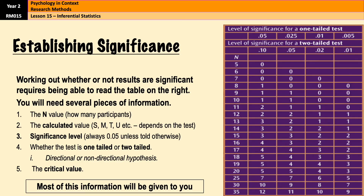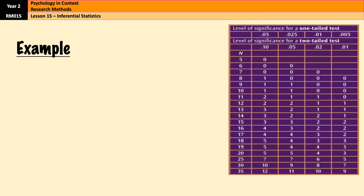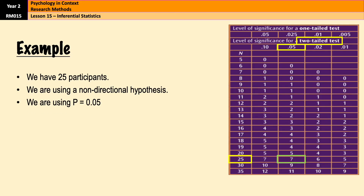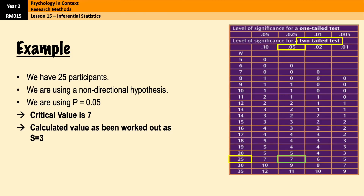Most of this information will be given to you. There might be a little bit of detective work needed, but as a general rule everything will be there. Let's look at an example using our experiment from earlier. We've got 25 participants, so we go to 25 in the n value. We're using a non-directional hypothesis, so that means we have a two-tailed test. We are using P equals 0.05. Now we know which column we're in, and our critical value is 7. The other bit of information we have is S equals 3 — so our calculated value is 3.